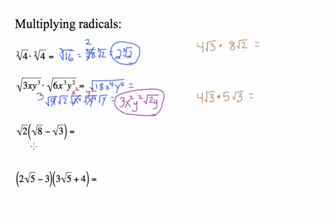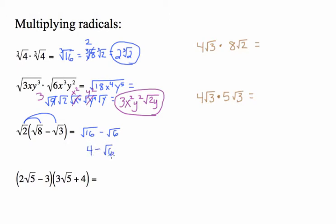Using the distributive property on radicals: square root of 2 times square root of 8 — just multiply the 2 and the 8 — gives square root of 16. Then minus square root of 6. The square root of 16 is 4, so the answer is 4 minus root 6.